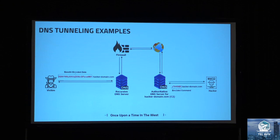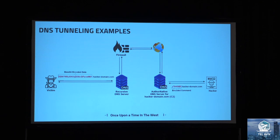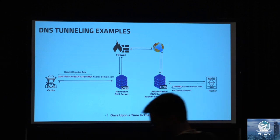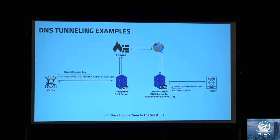Regarding DNS tunneling: it is a way of inbound and outbound communication through an under-monitored protocol. It's used basically to exfiltrate data through DNS queries. In this example, the threat actor is encoding information using base64 and launching the query through the recursive DNS server, through the firewall, through the internet, until it reaches the attacker's server or C2 command and control. The attacker can also send queries with information back that could be executed by the malware on the victim machine.